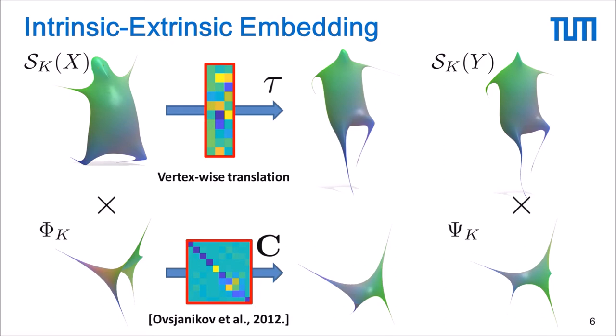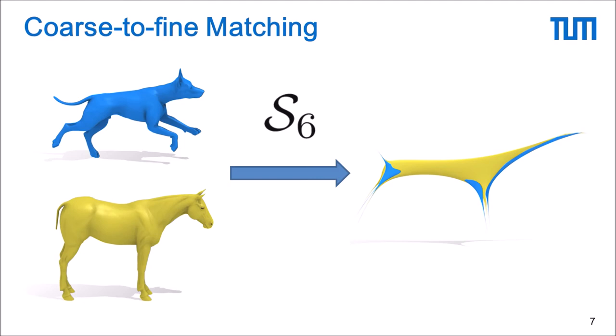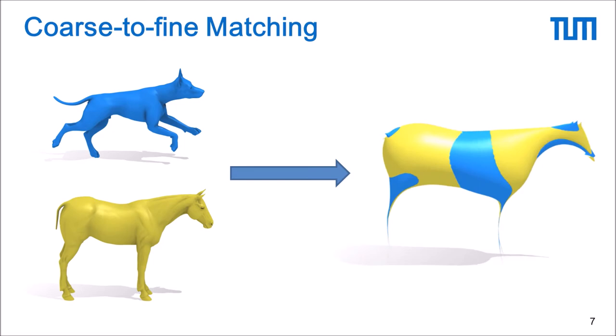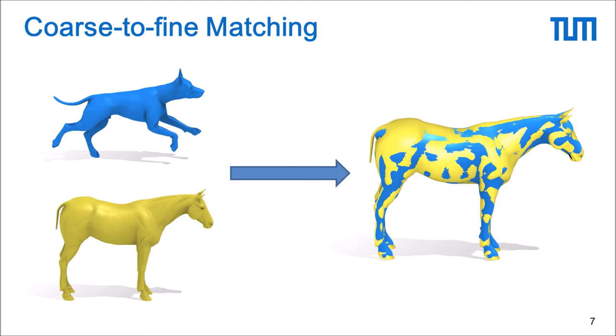Overall our method matches two input shapes in a coarse-to-fine manner. First we match the coarse features and then we add more and more details to refine the alignment such that in the end we obtain a matching of the original inputs.